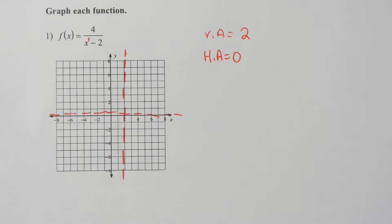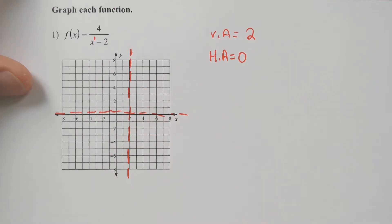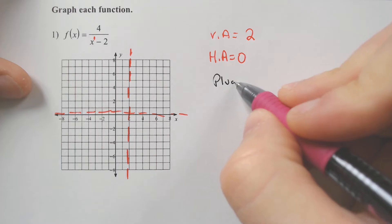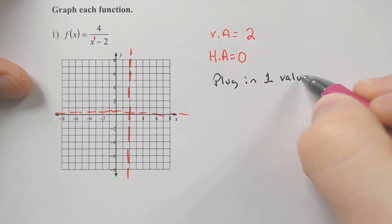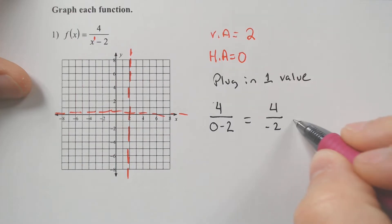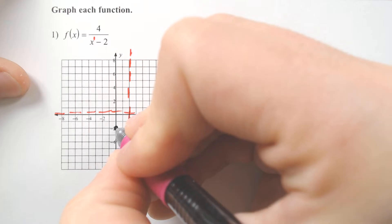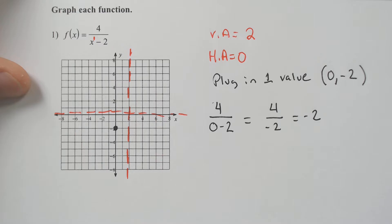The next thing that I would recommend doing is plug in any number for x that you want. However, I would make sure that it's kind of close to the vertical asymptote. But another good number is always just plug in zero if you can. And if we do that, plug in one value, we would have four over, I'm plugging in zero, zero minus two, which ends up being four over negative two, which is better known as negative two. Four divided by negative two is negative two. So we plugged in the point zero, and it spit out the value negative two. So that means that there is a dot here at zero, comma, negative two.